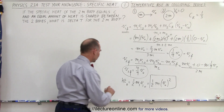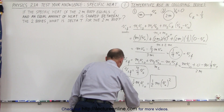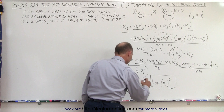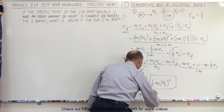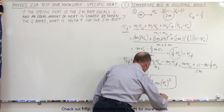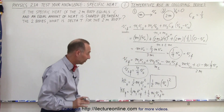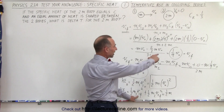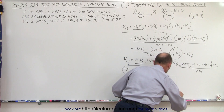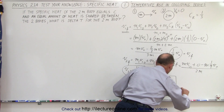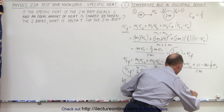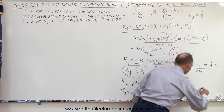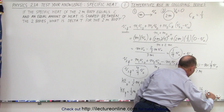Now let's find the final kinetic energy. KE-final equals one-half m1 times v1-final squared, plus one-half m2·v2-final squared. That would be one-half times m times one-ninth v-initial squared, which is 1 over 81 v-initial squared, plus one-half times 2m times its final velocity squared, which gives 16 over 81 v-initial squared.